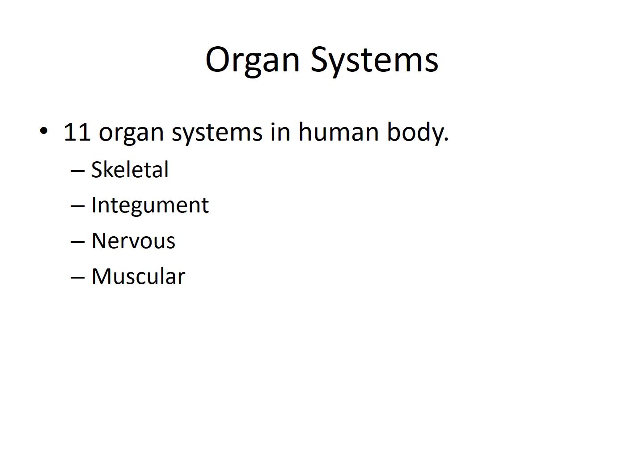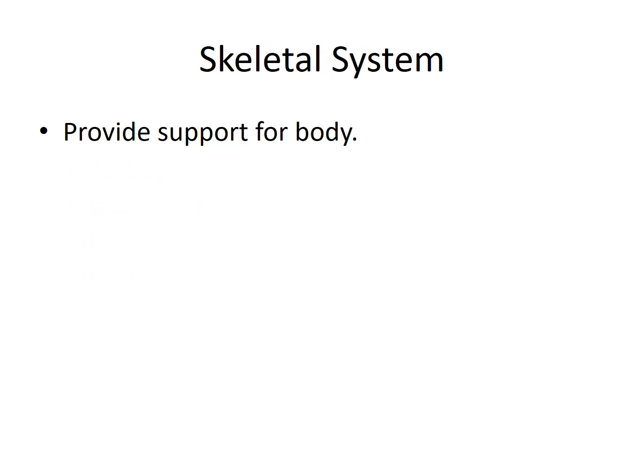The first of the four systems is the skeletal system, then the integumentary system. Next is the nervous system and the muscular system. Throughout the semester we'll be going into more detail of each of these four organ systems.